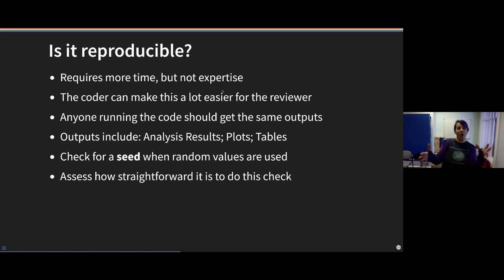The second kind of batch of goals - it takes a little bit more time but not much more expertise - is checking for reproducibility. So this is whether the code gives you the same outputs as it gave the original coder. This means they need to send you the output so you can double check. So things like the analysis results as written in the manuscript, or plots or tables, or the HTML file output from a Quarto document or a Jupyter notebook or an R Markdown document. So if you have those and then checking that if you run the code, does it produce all those same things with all the same numbers?